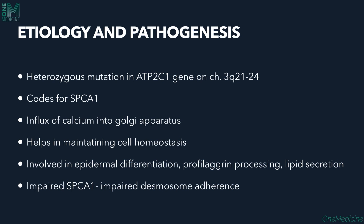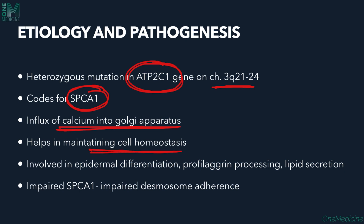Regarding etiology and pathogenesis, there is a heterozygous mutation in the ATP2C1 gene, located on chromosome 3q21-24. This gene codes for the SPCA1 protein, which helps in the influx of calcium inside the Golgi apparatus of the cell. This calcium influx is important in maintaining cell homeostasis. Calcium is also involved in epidermal differentiation, profilaggrin processing, and lipid secretion.